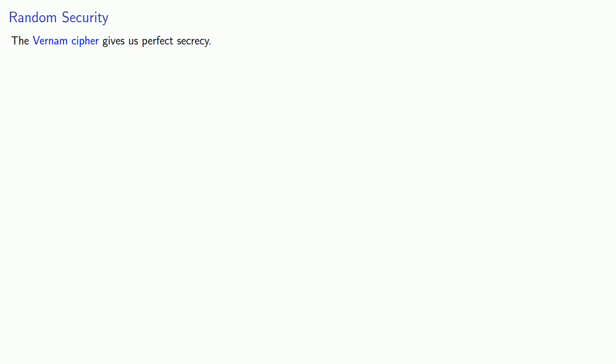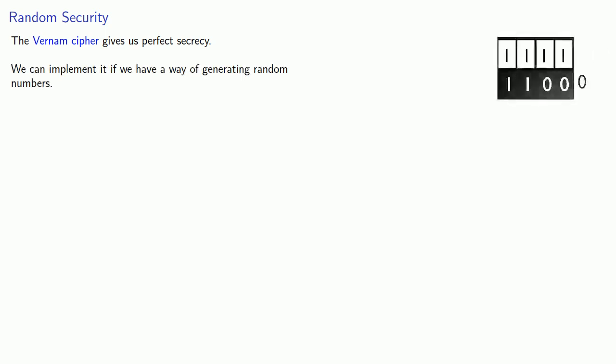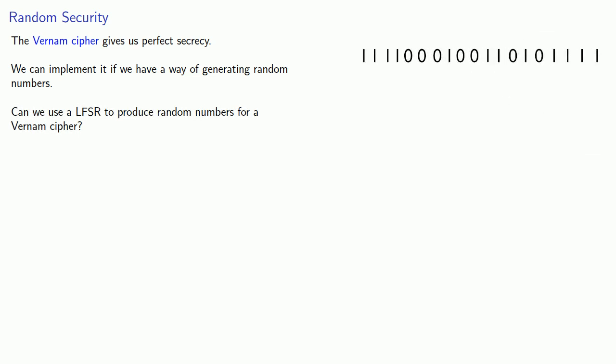Remember that the Vernum cipher gives us perfect secrecy, and we can implement it if we have a way of generating random numbers. So the natural question is, can we use a LFSR to produce random numbers for a Vernum cipher? And the answer is no. Given enough of the key, Eve can use the linearity to find the remainder.